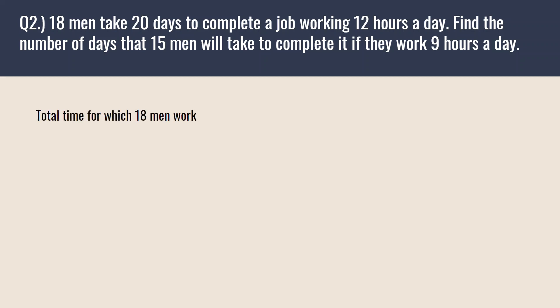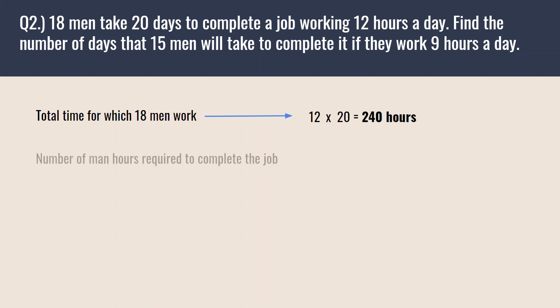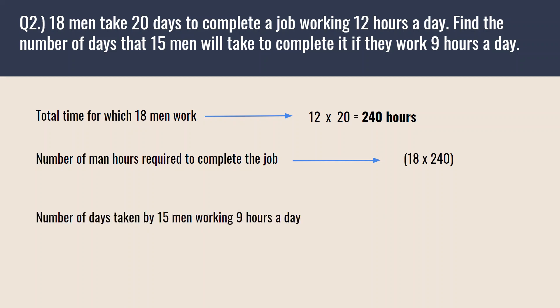The total time for which 18 men work is 12 × 20 = 240 hours. The number of man-hours required to complete the job is 18 × 240. The number of days taken by 15 men working 9 hours a day would be the total man-hours divided by 15 × 9, which gives us 32 days. This is how we solve these types of problems using the concept of man-days.